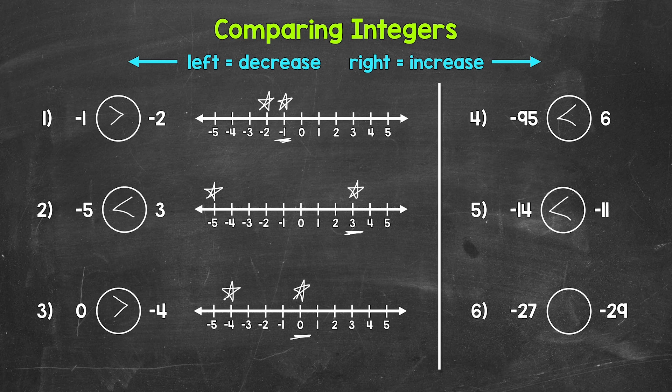Lastly, taking a look at number six, we have negative 27 is greater than, less than, or equal to negative 29. We have two negatives again. Which one is closer to zero, further to the right on a number line? That's going to be negative 27. Negative 27 is greater, so reading this from left to right, negative 27 is greater than negative 29.